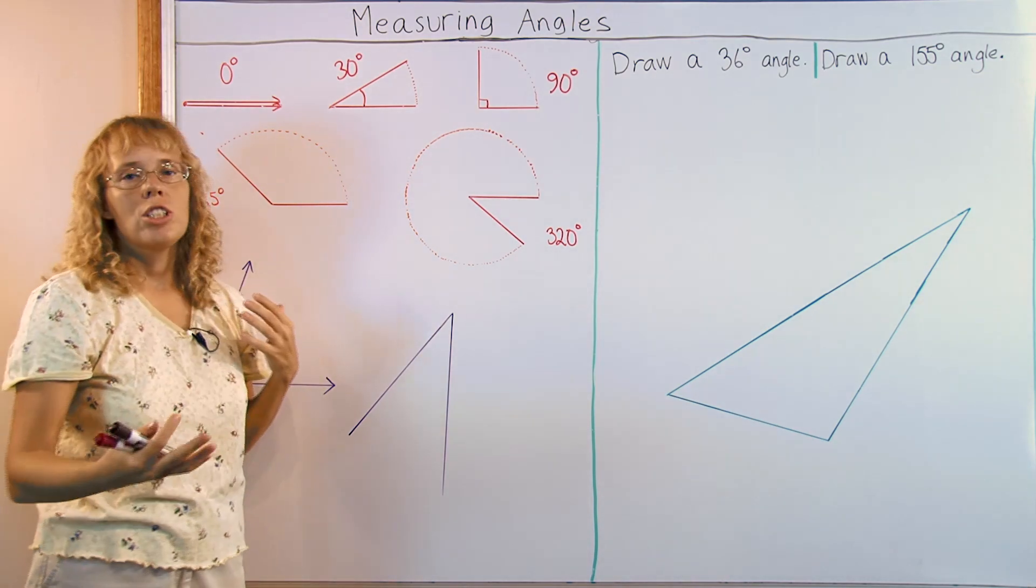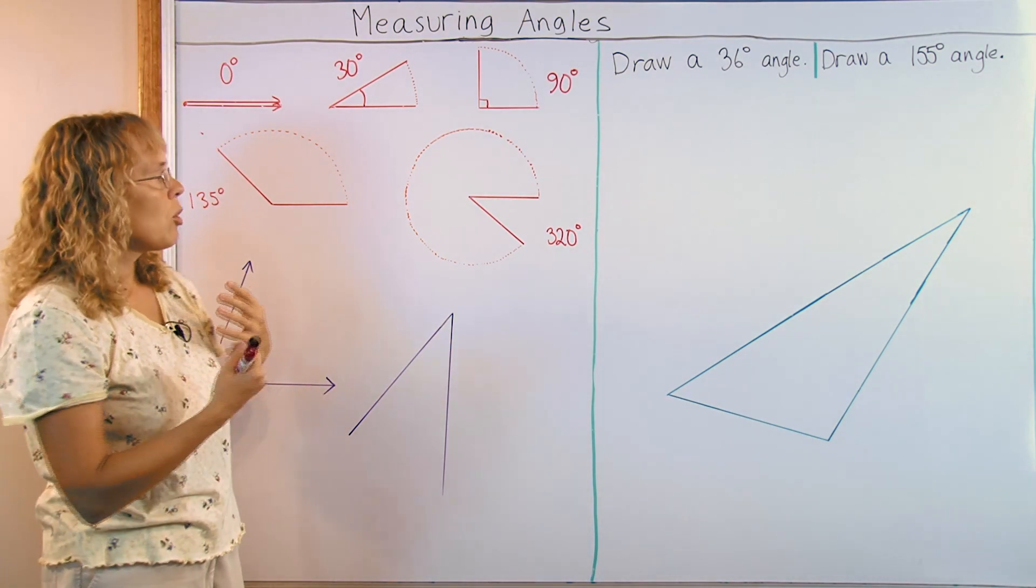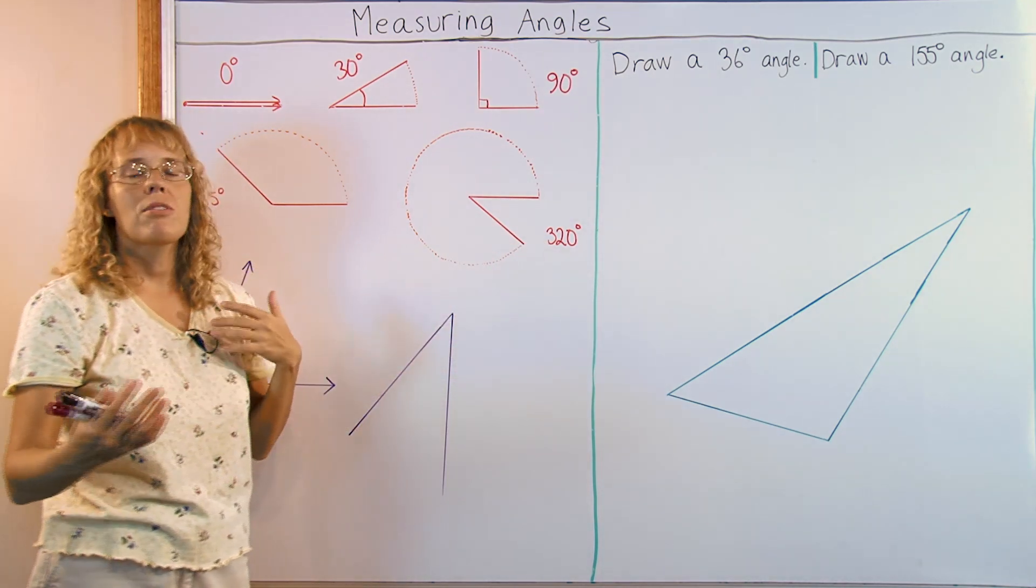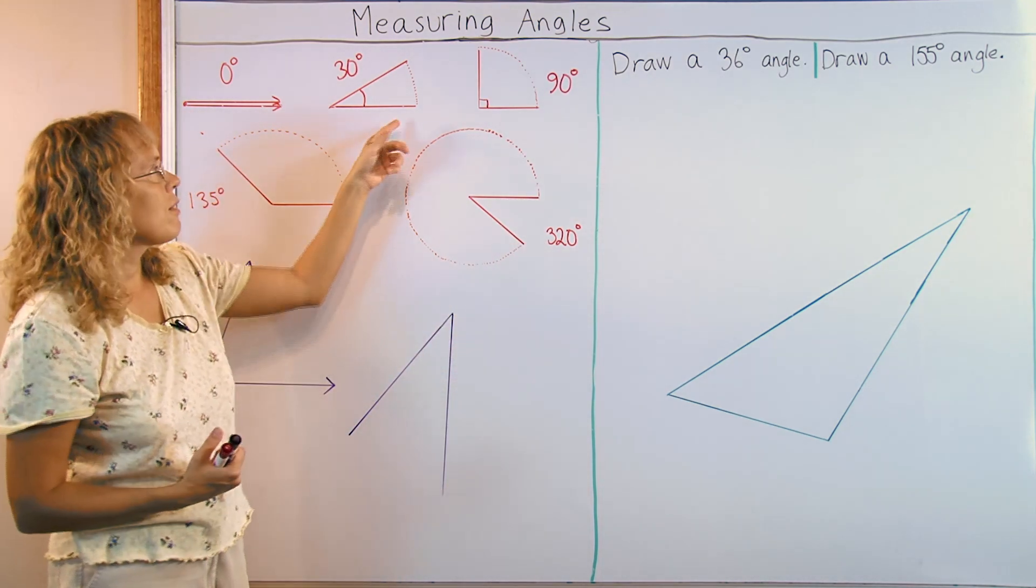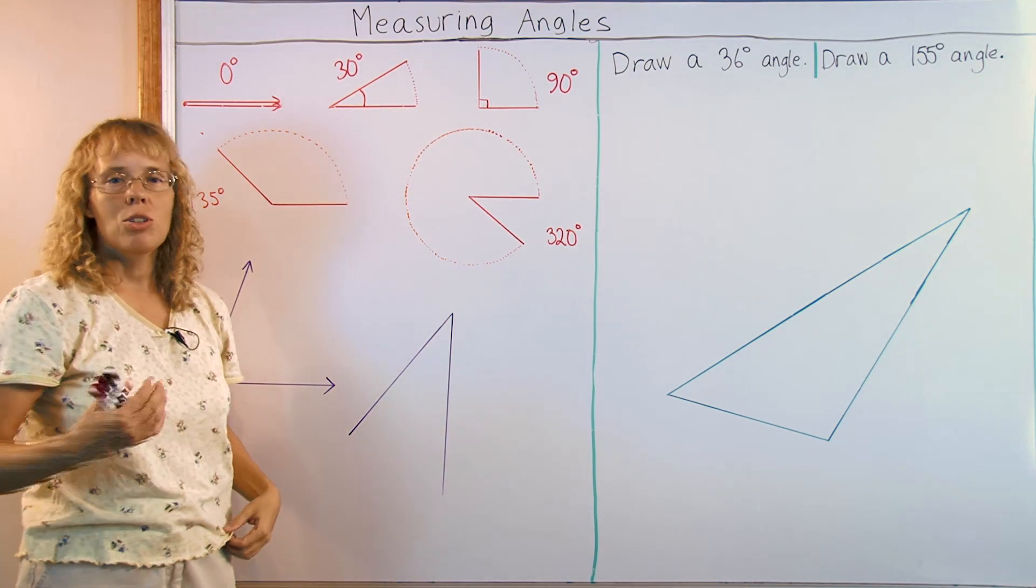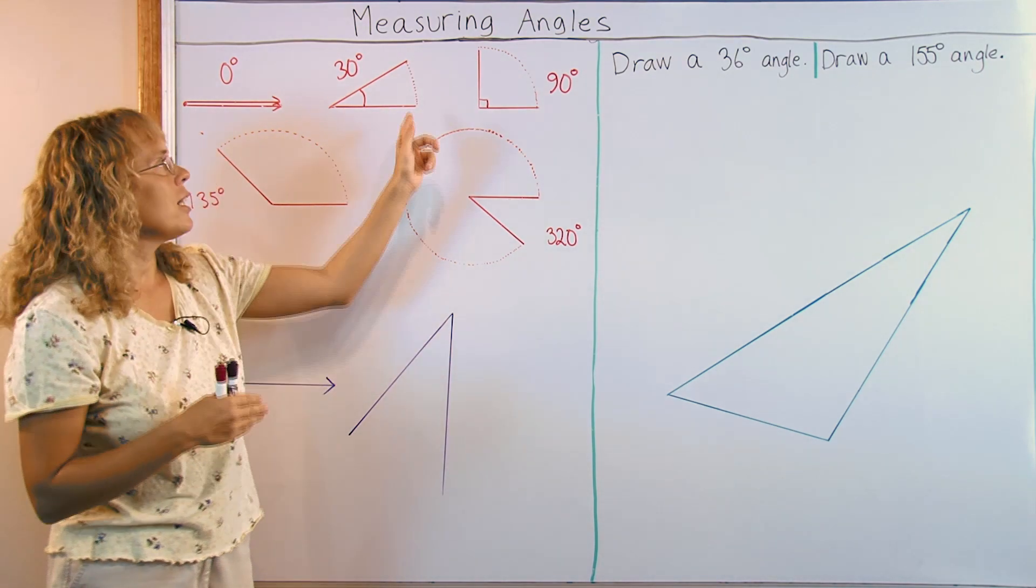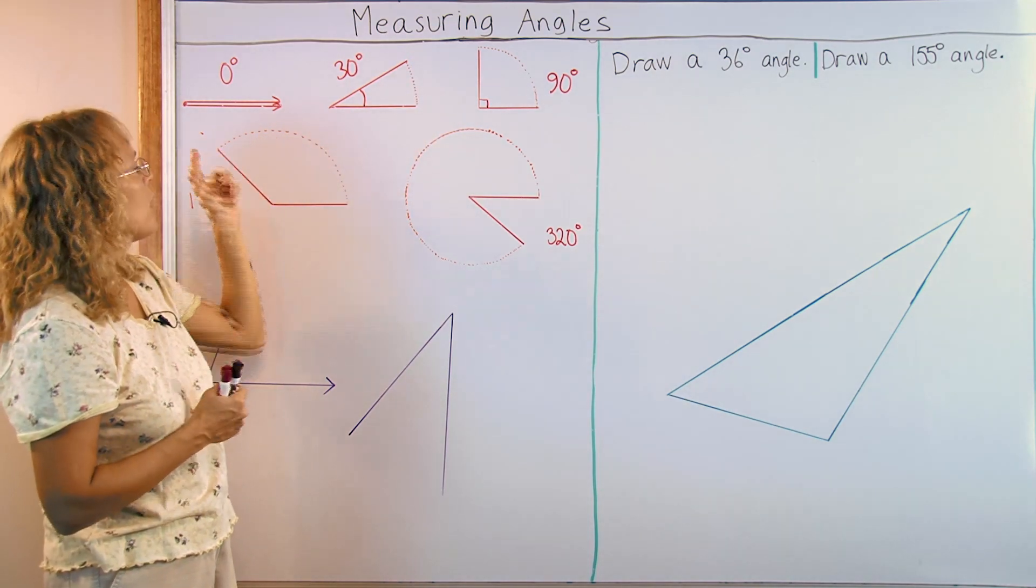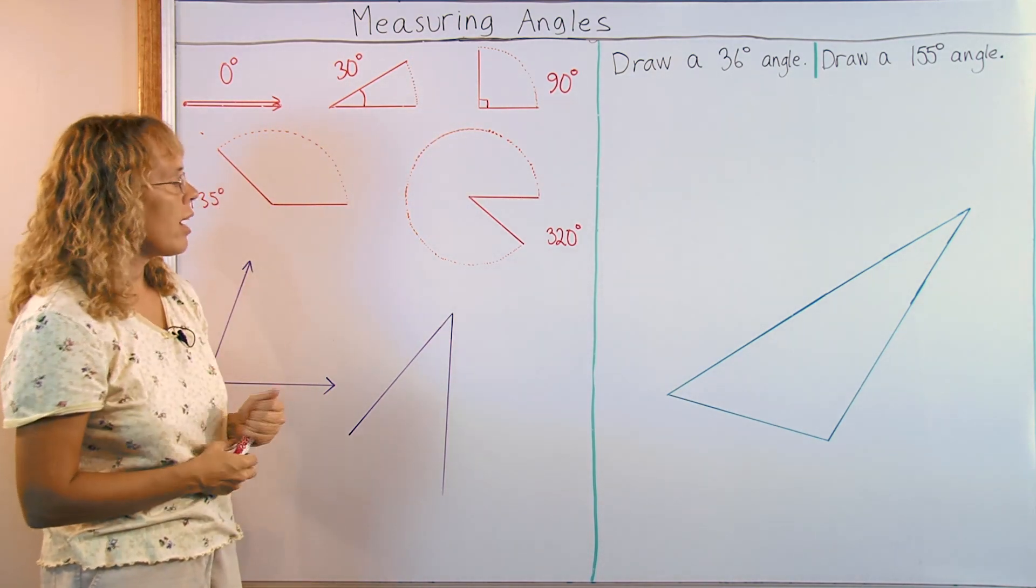And so we measure the angle comparing to the full circle. If it opened up to a full circle, it would be 360 degrees. Then if it opens up less than that, we just compare how much of the circle it has drawn or traced here, compared to the full circle. That's how angles are measured.